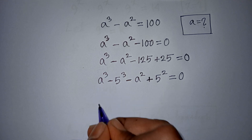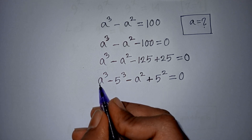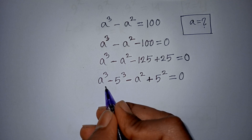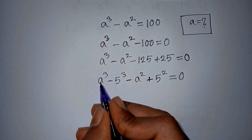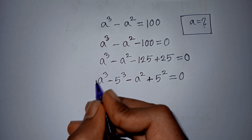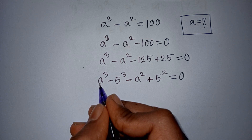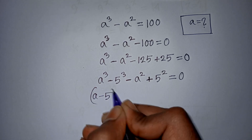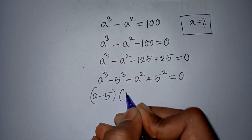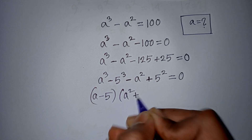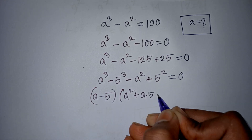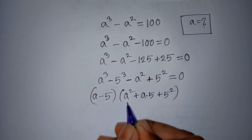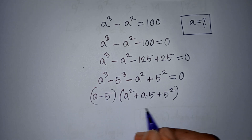Now, here you can apply the formula — we have a³ minus 5³, so compare with the formula of a³ minus b³. Here a is a, b is 5, so it will be (a minus 5)(a² plus 5a plus 5²), that means (a minus b)(a² plus ab plus b²).